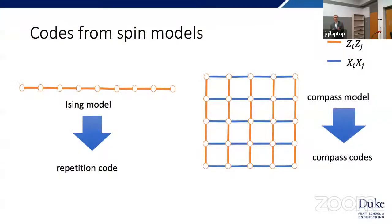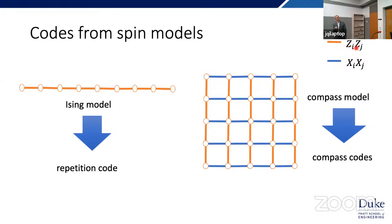From that chairlift conversation, we've been doing a lot of work on compass codes. A classical error-correcting code is like a ferromagnetic Ising model: two ground states (everybody agrees / everybody disagrees), with errors creating domain walls that we correct by bringing them together — leading to the repetition code. In two dimensions there's the compass model, where the direction of spin-spin coupling depends on the bond direction, and from this we can build compass codes.